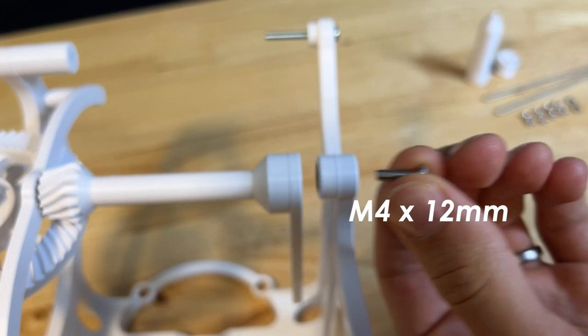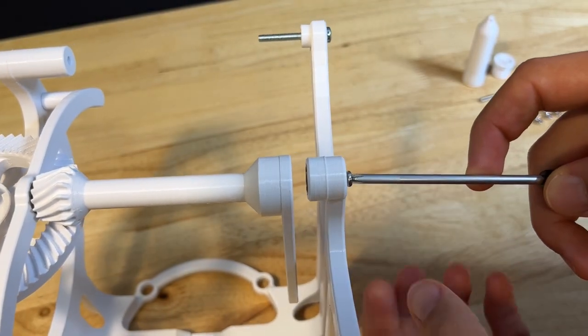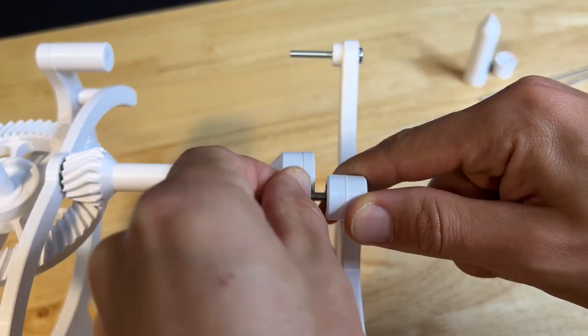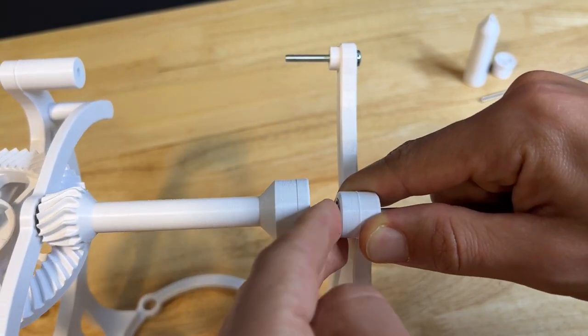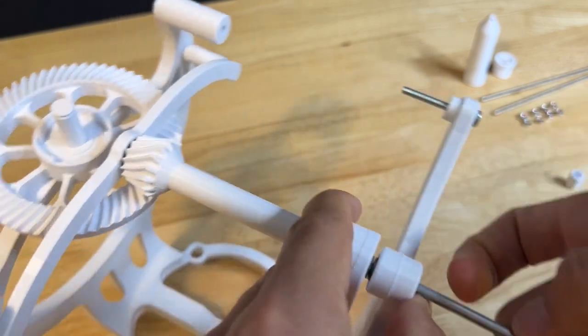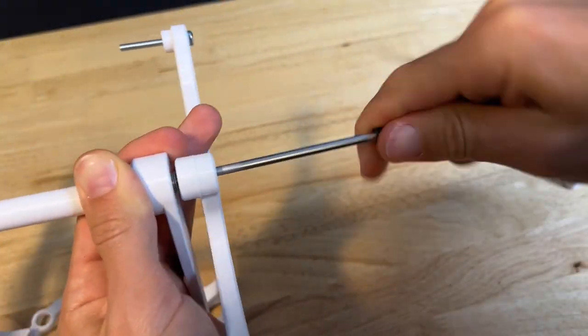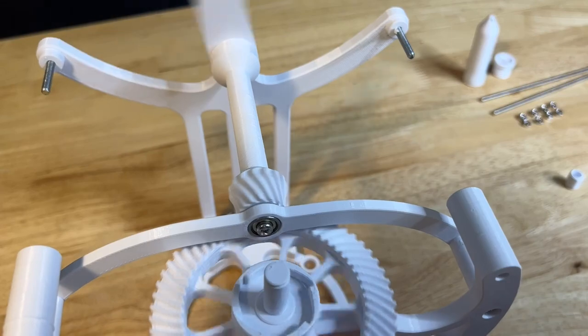Using an M4 by 12 millimeter screw, slide that in through the top bearing and holding it with your screwdriver, throw two washers onto the end of that screw. And then that will screw into the top of the swing arm. You don't have to screw this all the way down, just enough to make sure that everything can swing freely.